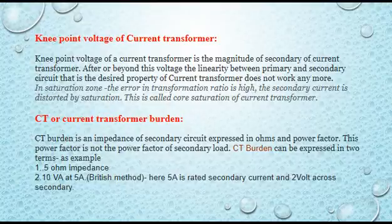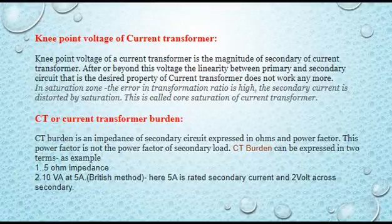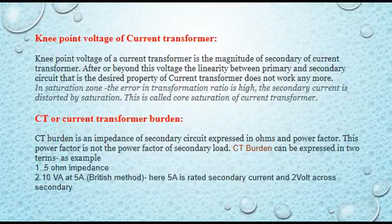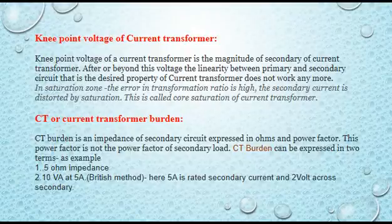CT burden is the impedance of the secondary circuit expressed in ohms and power factor — note this power factor is not the power factor of the secondary load. CT burden can be expressed in two ways: for example, as 5 ohms impedance, or as 10 VA at 5 ampere rated secondary current, which gives 2 volts across the secondary. The second is the British method.